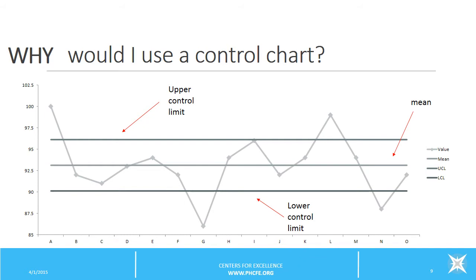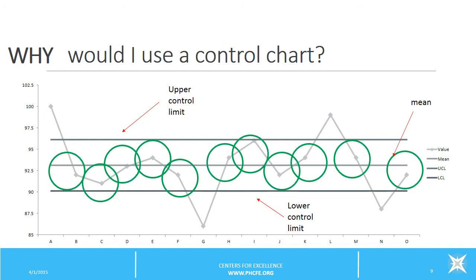Now, most of the data points fall within or between the upper and lower control limits, which is illustrated here with the green circles, highlighting all of the individual data points that fall within these control limits. This represents the variation that is expected, also called common cause variation.